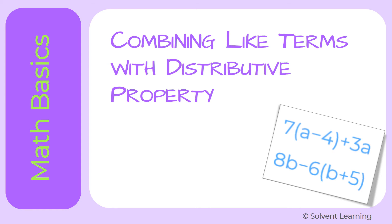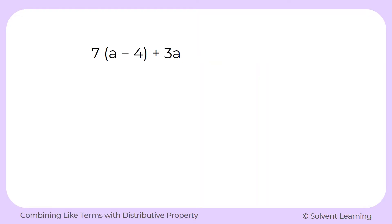Next, we'll look at how we use the distributive property with combining like terms to simplify expressions. This expression has a few things going on. We have 7 being multiplied by a minus 4 in parentheses, and then as a separate term, we have plus 3a.